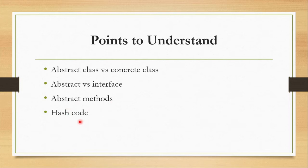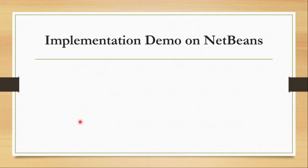Hashcode basically displays the object's memory location. When we create an object in the program it allocates some memory, and the address of that allocated memory is displayed in hashcode format. Now let's dive into NetBeans for the practical implementation.